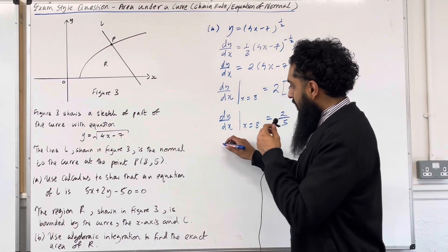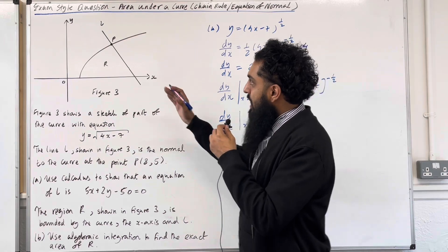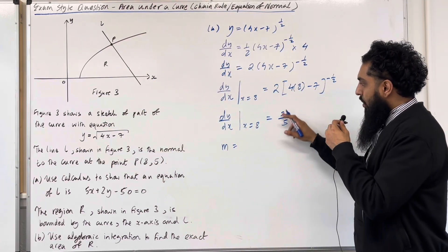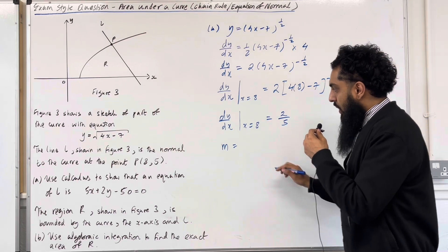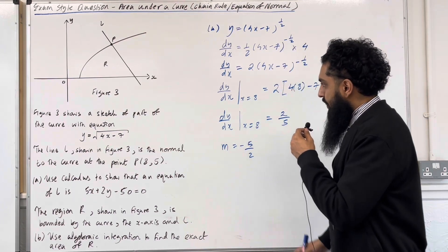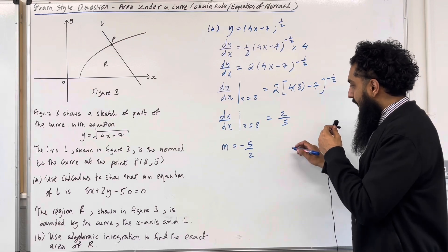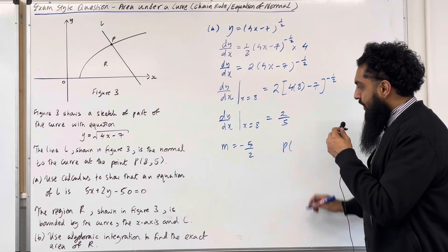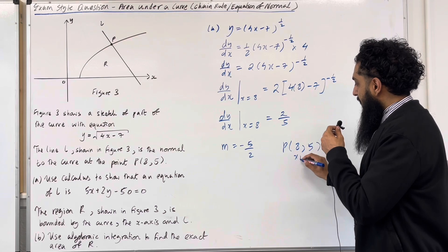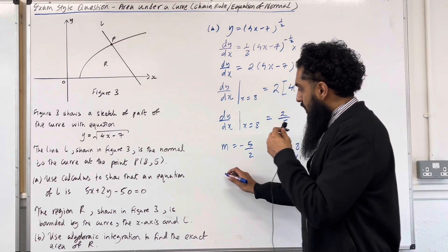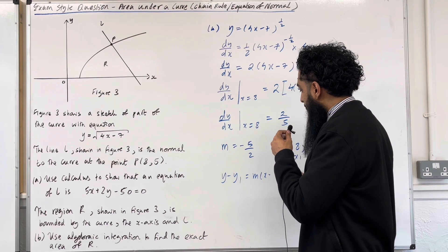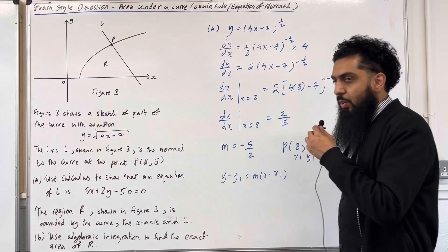The gradient of the normal — the gradient of line L — is the negative reciprocal of the gradient of the tangent, so it is minus 5 over 2. We have the gradient of L and we know L passes through P with x coordinate 8 and y coordinate 5, so x1 equals 8 and y1 equals 5. We can use y minus y1 equals m times (x minus x1) to find the equation of L.